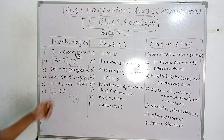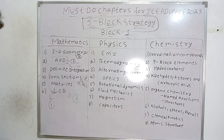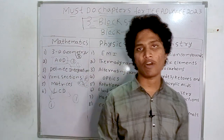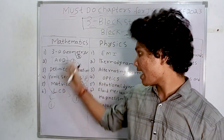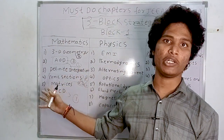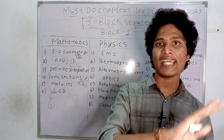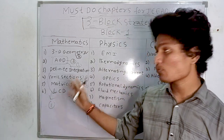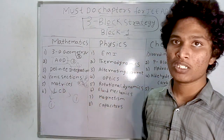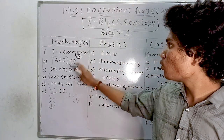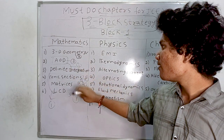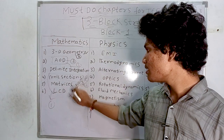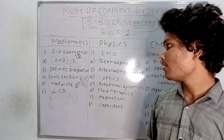Definite integration and LCD together formed a mixing question. Conic sections also appeared — one question from parabola and one from ellipse/hyperbola in JEE Advanced 2022 paper one. Adding matrices (two questions), the total comes to approximately nine questions from block one mathematics, giving around 36 marks.